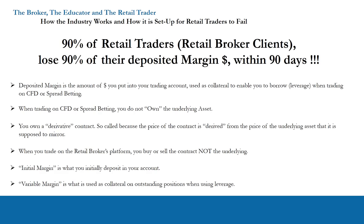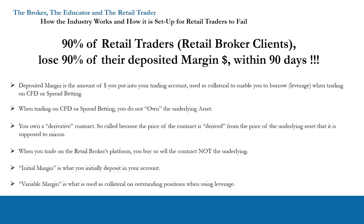There are two types of margin. There's the initial margin you put in your account, and once you have a position, what we call variable margin — how much your margin is going up and down, how much you're making or losing. If you buy the contract and the stock goes in your favour, the broker pays the difference into your account. If you're losing money, the broker takes money out. When your margin goes to zero, you get a margin call — you have to deposit more money. If you can't, the broker stops you out and your account is blown up.